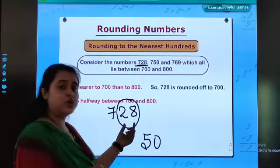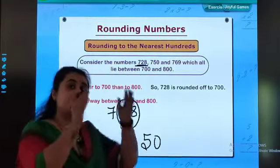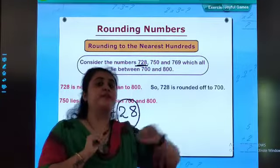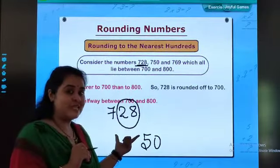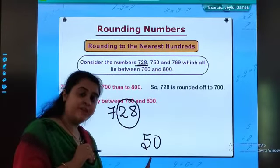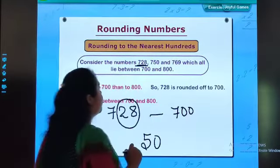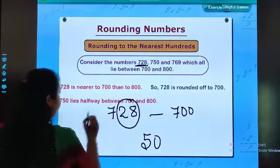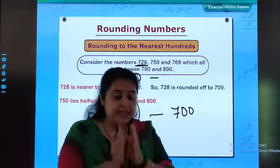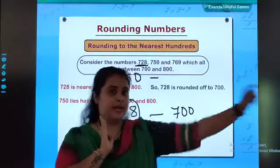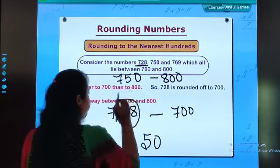Last two digits, less than 50, then we will be moving to the previous hundred. If the digits are 50 or greater than 50, we will be moving ahead. So, what will be the round off of 728? 28 is less than 50, so the round off will be 700. The next number is 750. What will be the round off of 750? 50. We will be moving ahead, so 800.